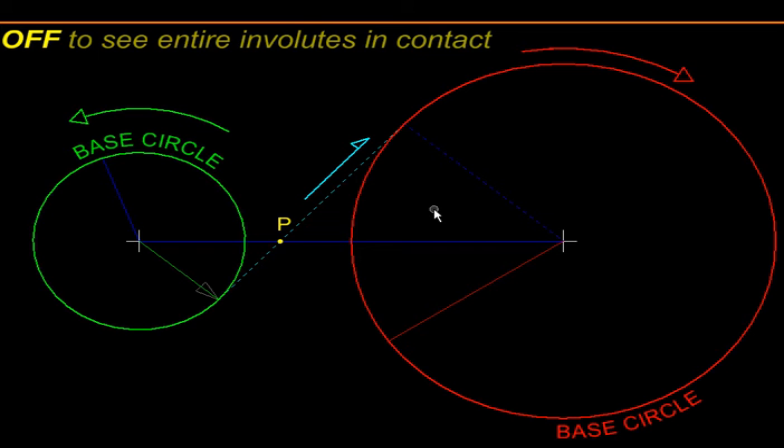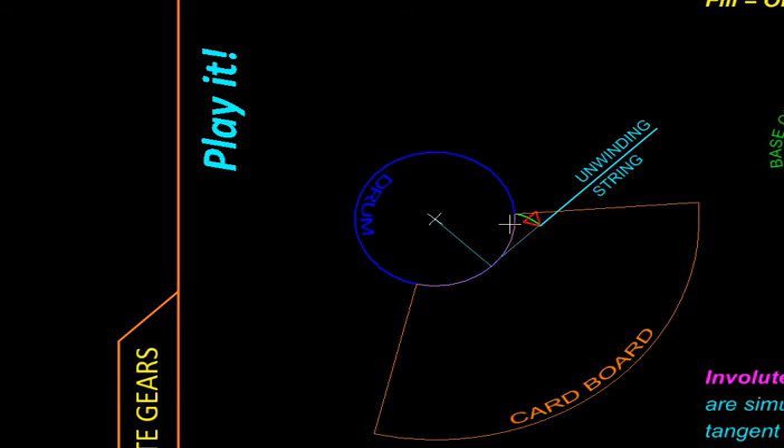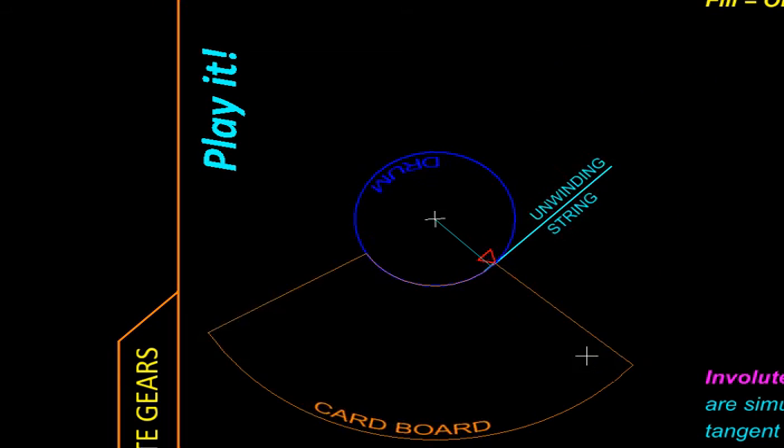To understand what kind of profile this generates, let us concentrate on any one of these pulleys and use this setup. This is the pulley; to it a cardboard is attached on which we can draw. Instead of belt, we have this extensible string, and on it there is a pencil. Let us set this in motion, and you can see as the string unwinds and the pulley rotates, relative to that pulley, on the cardboard a curve is getting traced.